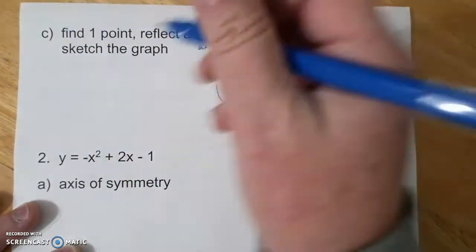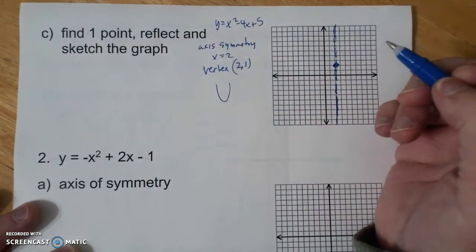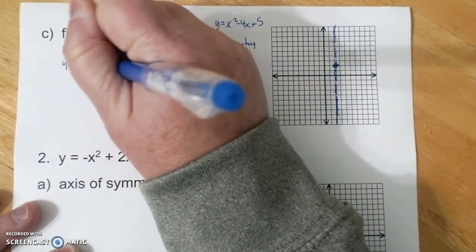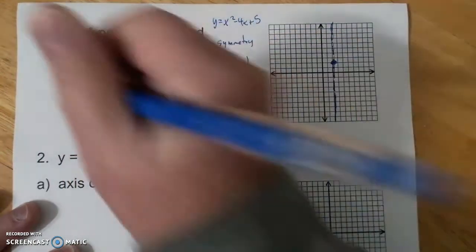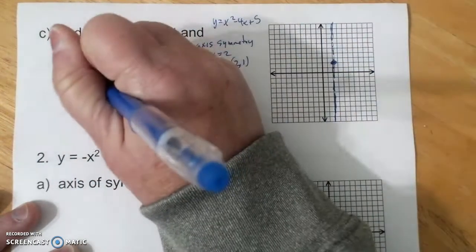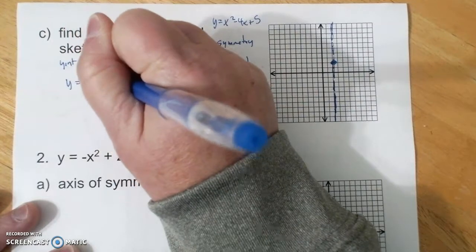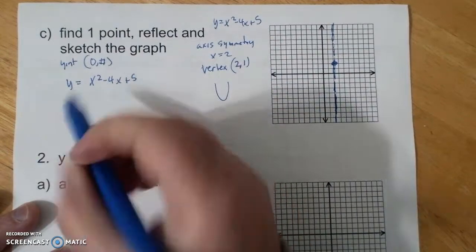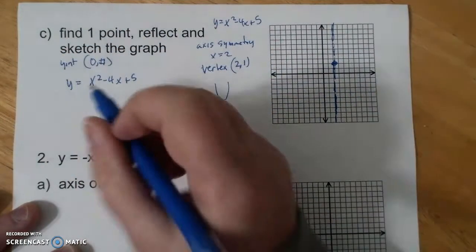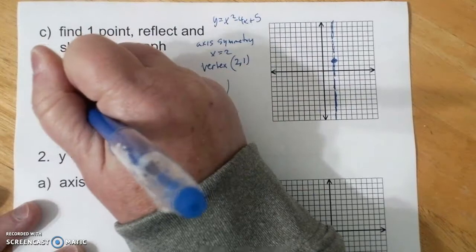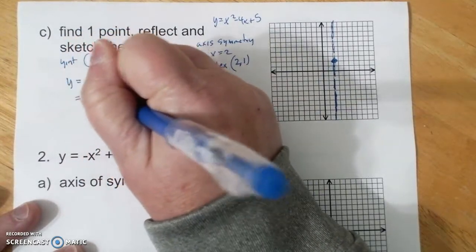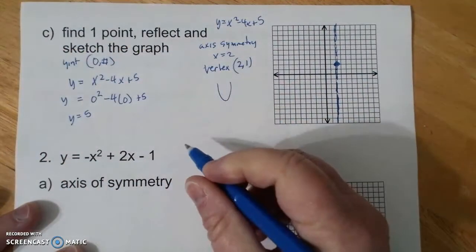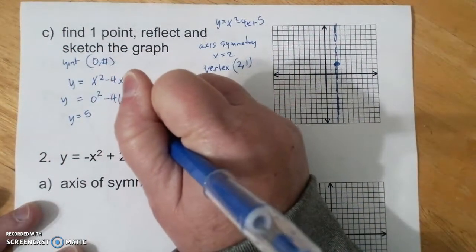So when I have my one point, one of the points that I'm always interested in is the y-intercept. And remember, all y-intercepts are 0 for the x and a number. So I'm going to do y equals x squared minus 4x plus 5, and I'm going to plug in my 0 for my x's. 0 has so many properties of making things disappear, it's nice. So I get y equals 5. So my point is 0 comma 5.